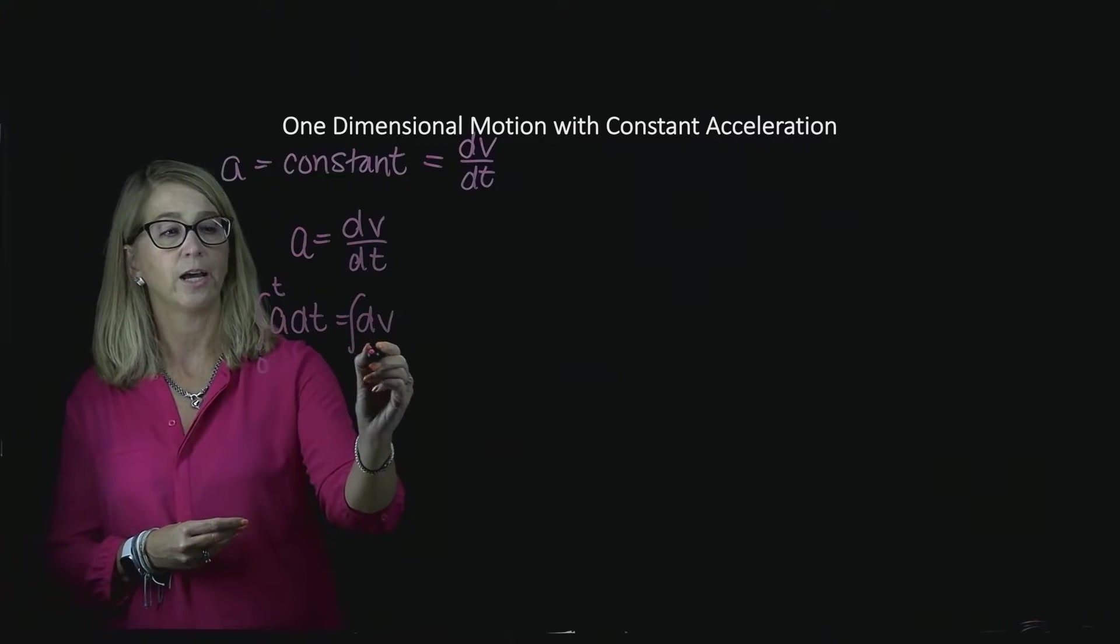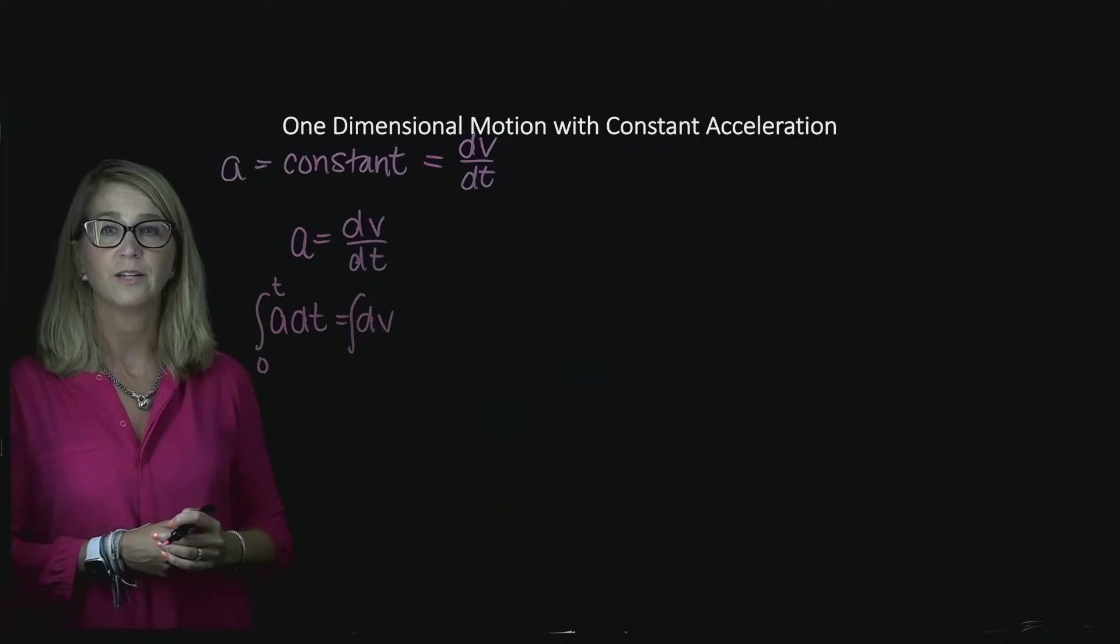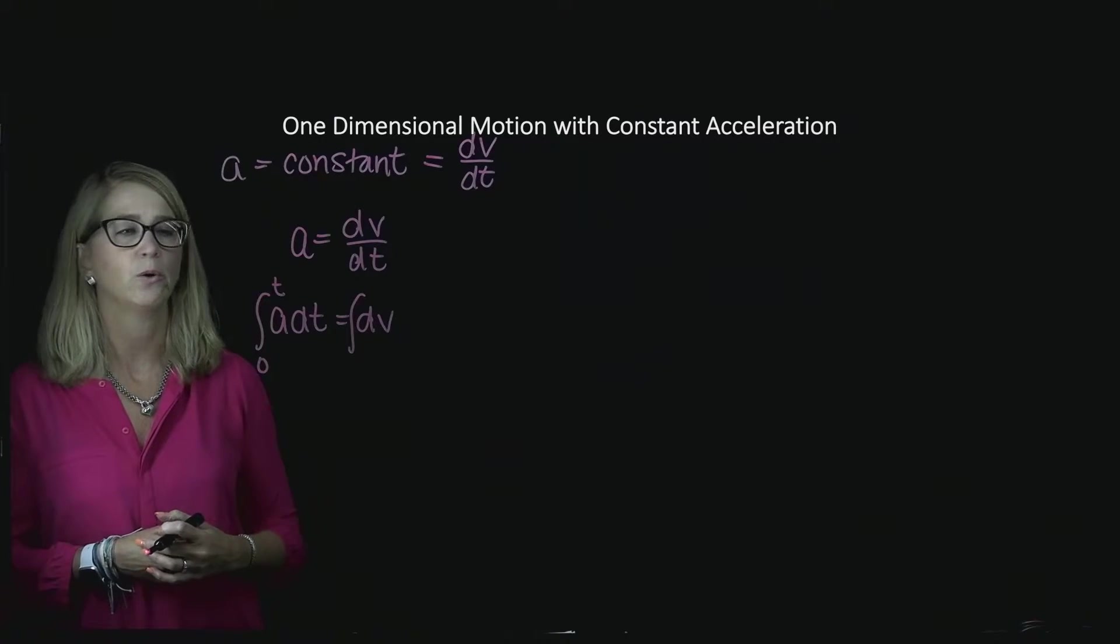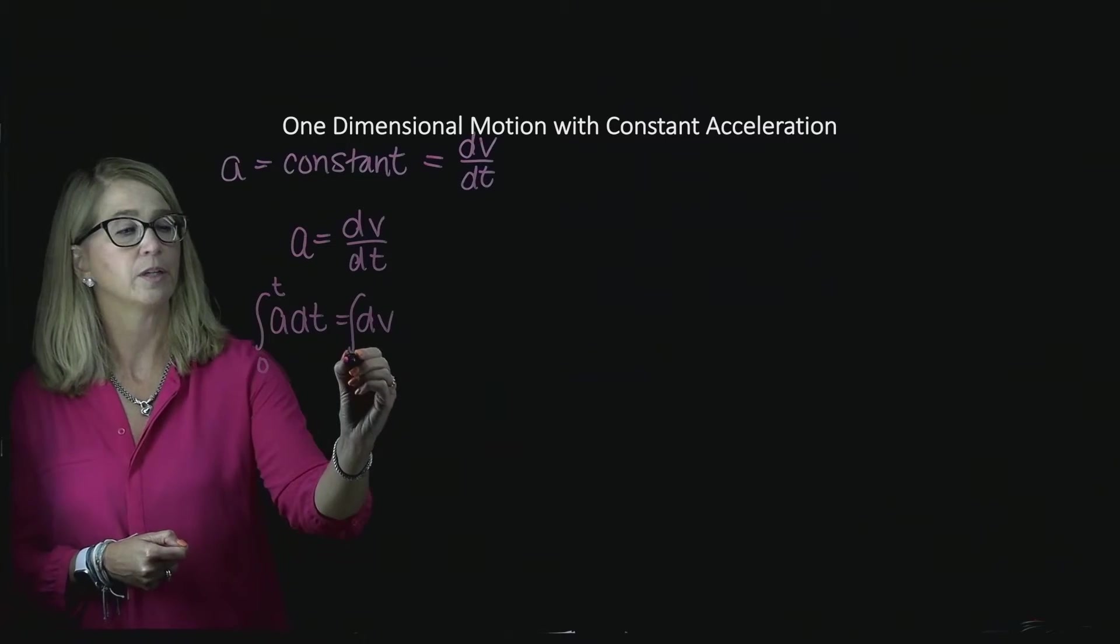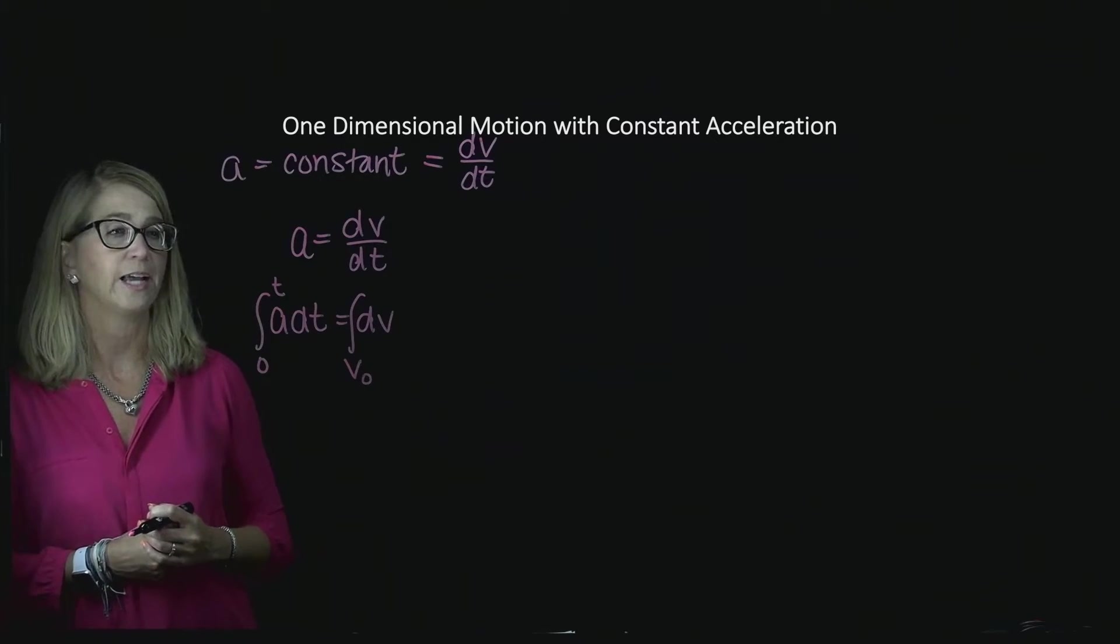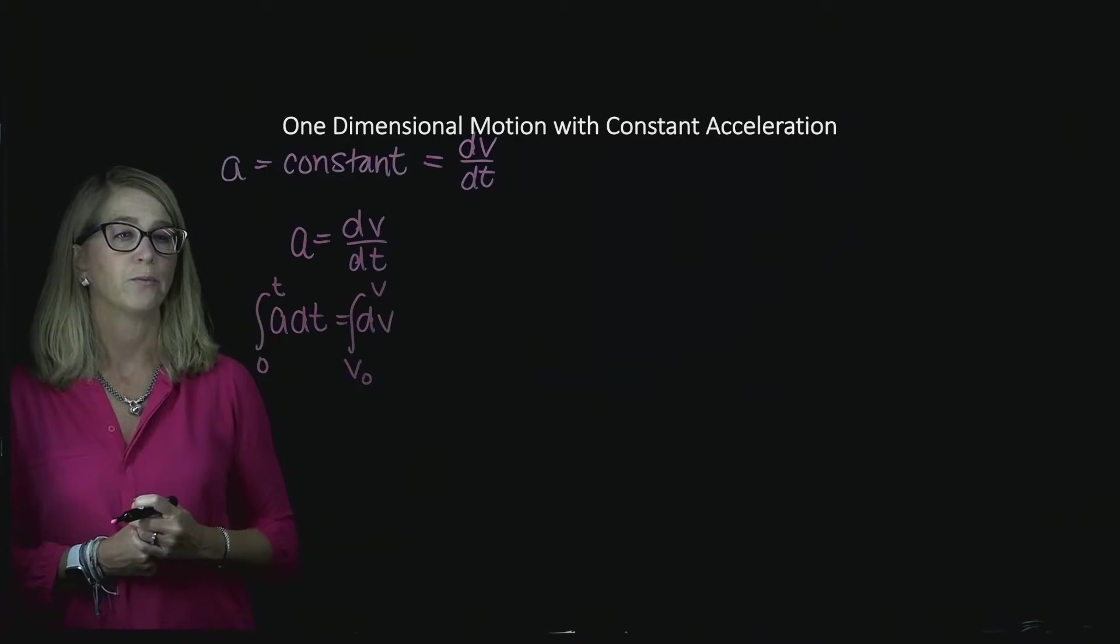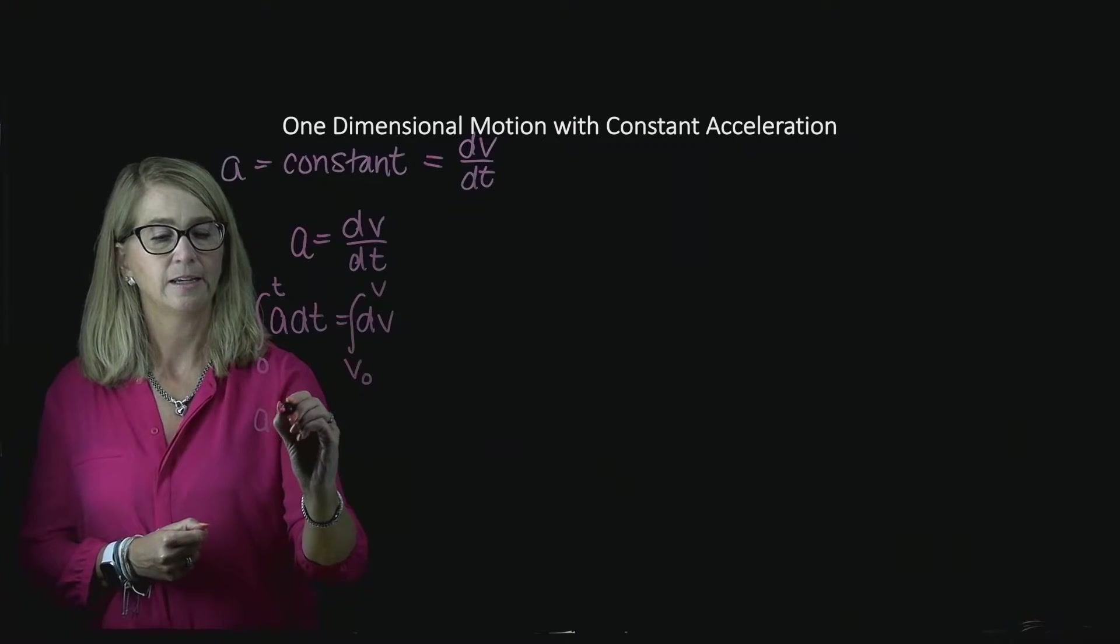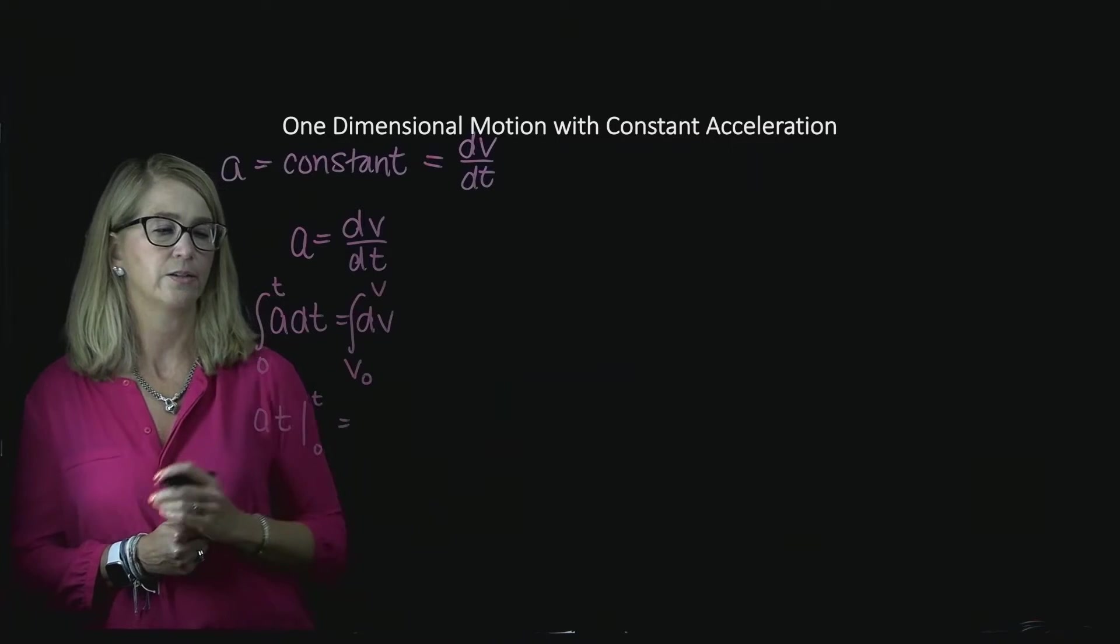Now on the other side where I have the velocity, my limits of integration for the velocity have to be similar or correspond to my limits for time. So the lower limit for velocity has to be the velocity it had at t equals zero. And typically we call that v naught. That's the initial velocity. The velocity it had at some arbitrary time, we can just call v. So if I integrate both sides starting with a dt, I get a times t. And I'm going to evaluate it at my limits, t and zero.